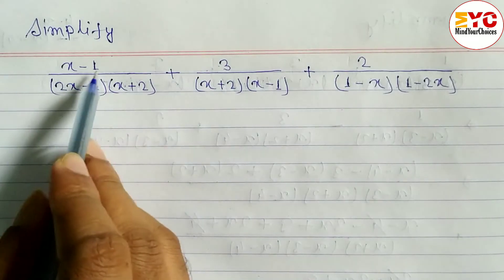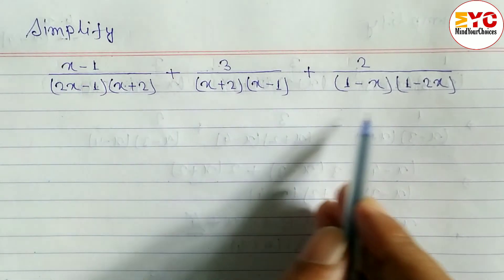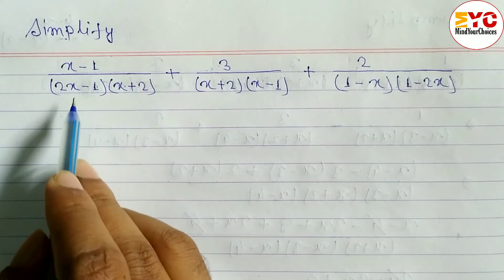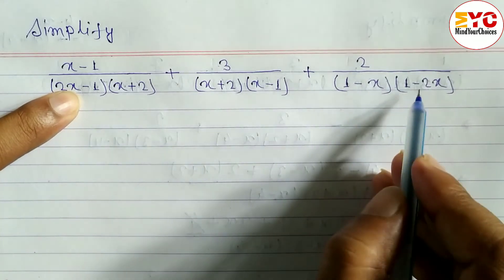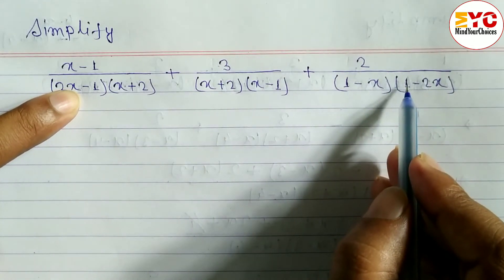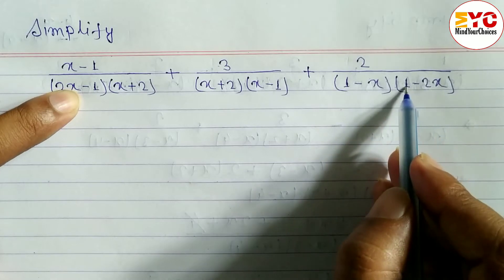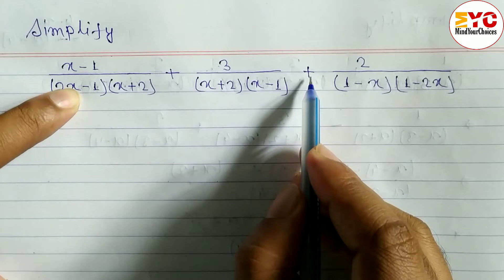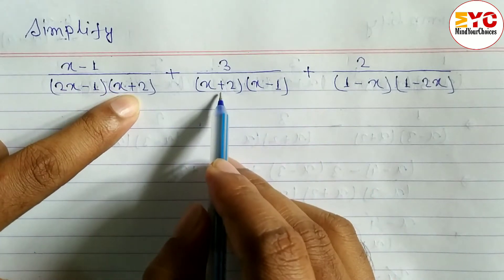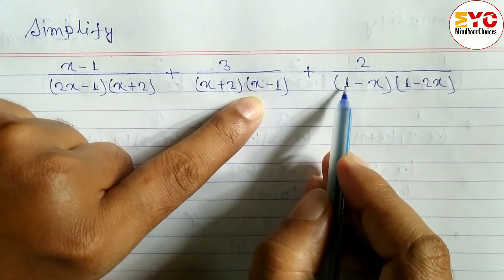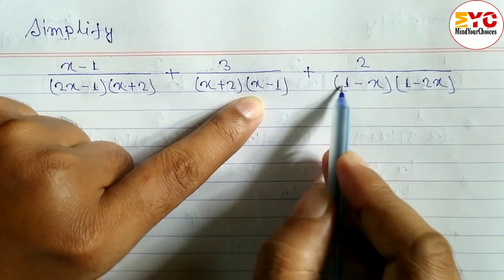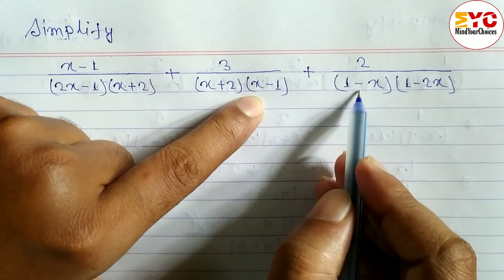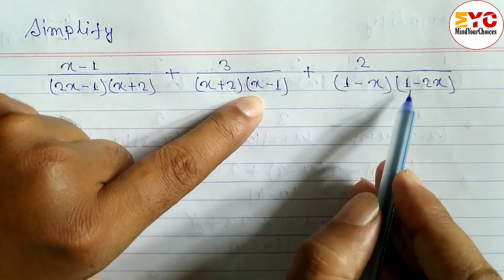The next question involves fractions with denominators containing (2x minus 1), (x plus 2), and (x minus 1). First we look for common elements. Here is 2x minus 1, and here 1 minus 2x — so we can convert: interchanging gives 2x minus 1. Here is x plus 2, same on both sides. Here is x minus 1, but here is 1 minus x — we need to interchange again.